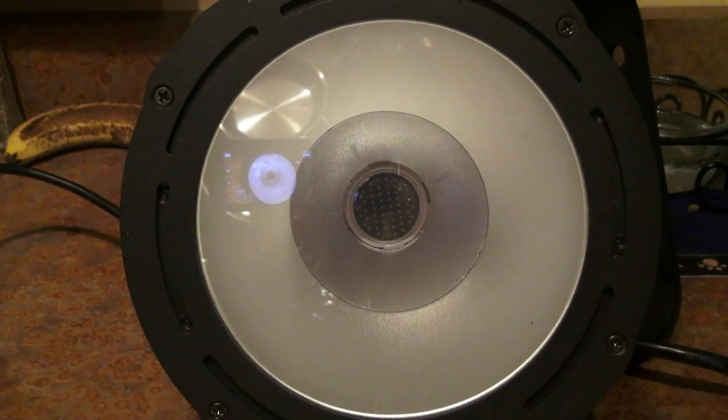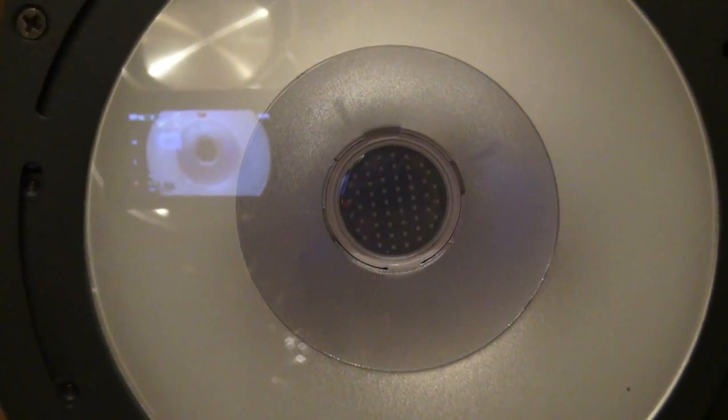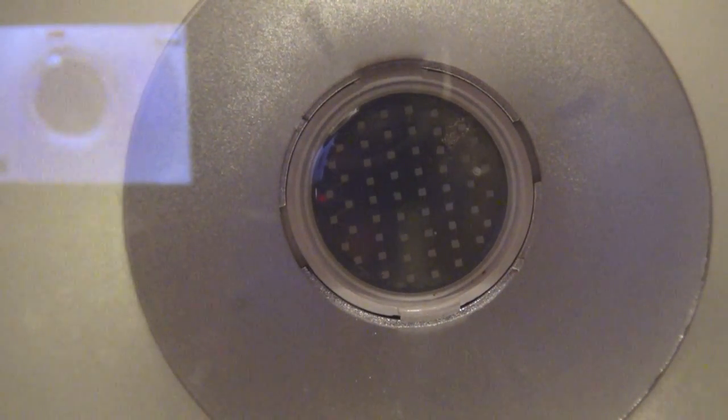COB is very different. It's a chip, and if I zoom in here, you can see it. There's all these little individual dots. All those dots, each dot is a diode,